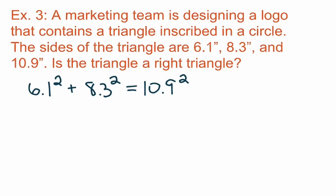So we get 6.1 squared is 37.21 plus 8.3 squared gives us 68.89.